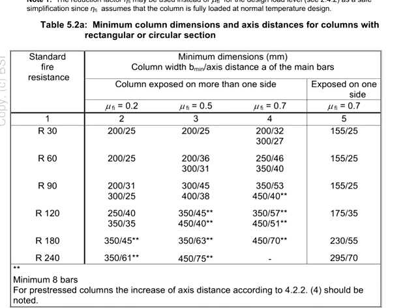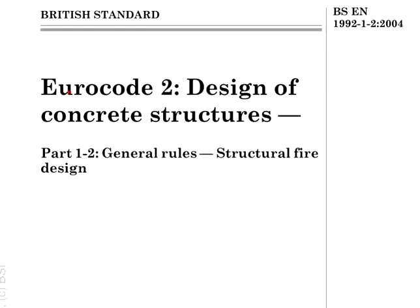First of all, the purpose of minimum dimensions as well as the axis distance is meant for the fire resistance. The relevant value may be obtained from Eurocode 2 Part 1-2 in terms of the structural fire design.